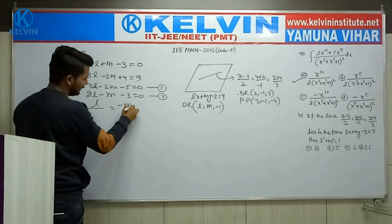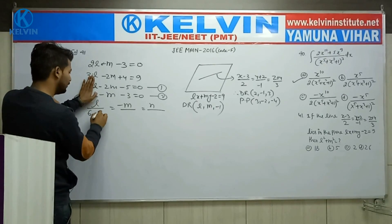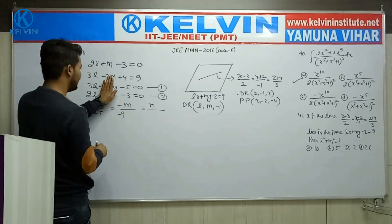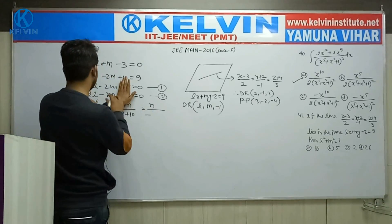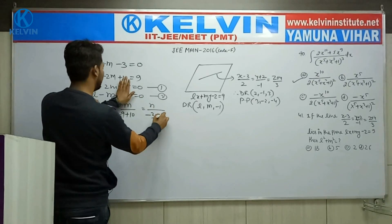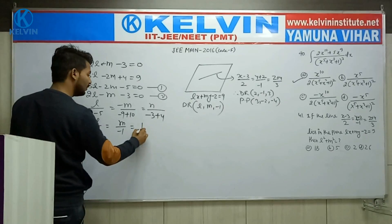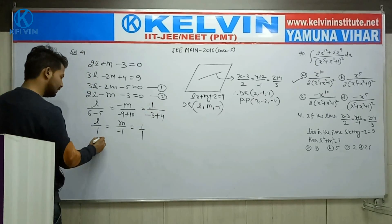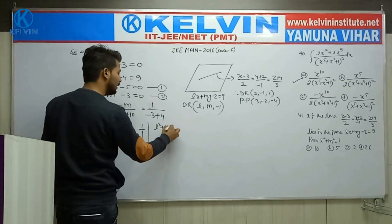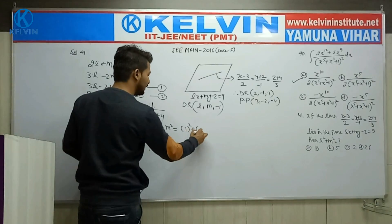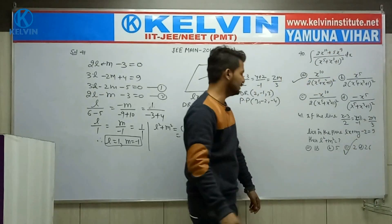Solve them. l minus m equal to n. This is plus 6 and this is minus 5. This is minus 9 and this is plus 10, and this is minus 3 and this is plus 4. So now this is l upon 1, m upon minus 1, and this is 1 upon 1. Therefore l equal to 1 and m equal to minus 1. Now they want to know the value of l square plus m square. So therefore l equal to 1 and this is minus 1 square, so this is finally 2. Option c is correct.